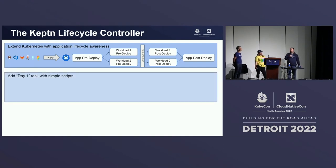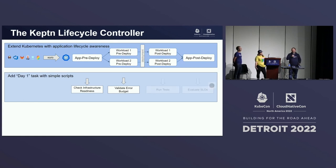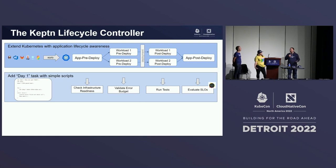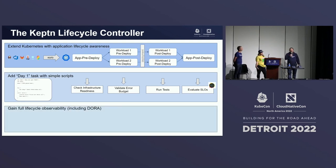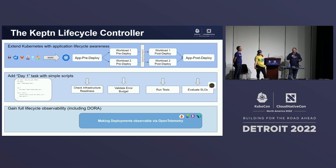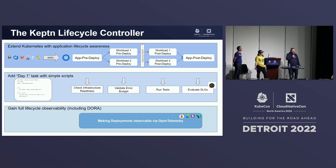After all app pre-deployment tasks and evaluations succeed, we can do the same thing on the workload level — for deployments, StatefulSets, and so on. After pre-deployment tasks finish, we let Kubernetes schedule the pod, and after the pod is running, we can do post-deployment tasks on both workload and application levels. The lifecycle controller supports tasks with simple scripts — you can write simple TypeScript functions — with support for running containers or custom runtimes in the future. You always get full lifecycle observability via OpenTelemetry in a vendor-neutral way.